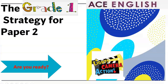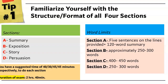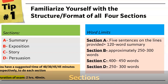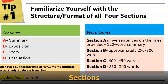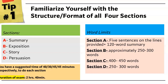We begin by looking at some strategies for Paper 2. The first tip I would encourage is that you familiarize yourself with the format of all four sections. Section A: Summary. Section B: Exposition or Transactional Writing. Section C: Story. Section D: Persuasive Writing. You have a suggested time of 40, 30, 45, and 45 minutes respectively for each section. The duration of the exam is 2 hours and 40 minutes.